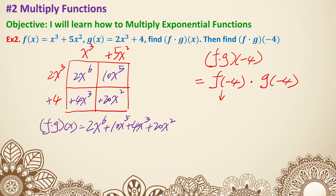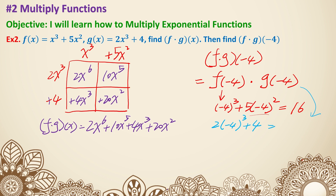f of negative 4 is negative 4 to the third power plus 5 times negative 4 squared, which is negative 64 plus 80, giving positive 16. Then g of negative 4 is 2 times negative 4 to the third power plus 4, so the first part is negative 64 times 2, which is negative 128, plus 4, giving negative 124. So we need to multiply 16 and negative 124 together, which is negative 1984.